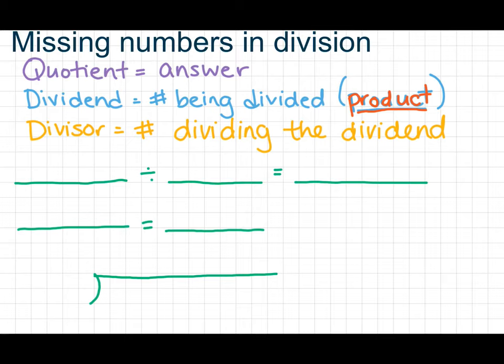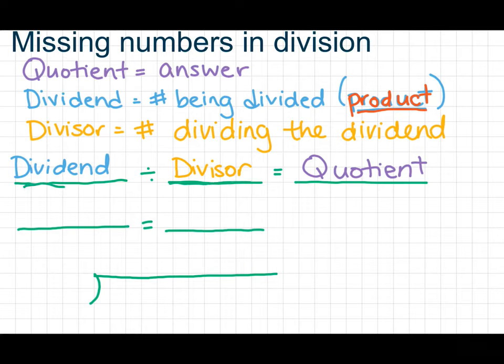So there are three ways to set up a division problem. The first one is just your basic dividend divided by your divisor is going to equal your quotient. And that's how you'll see a lot of problems. If it's set up like a fraction, remember, all fractions are actually division problems. That's important for you to remember. All fractions are, in a sense, division problems.